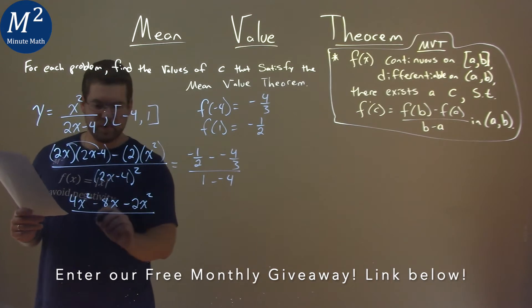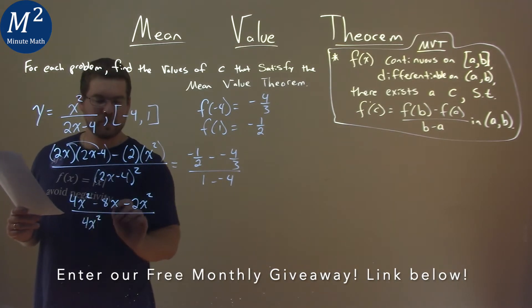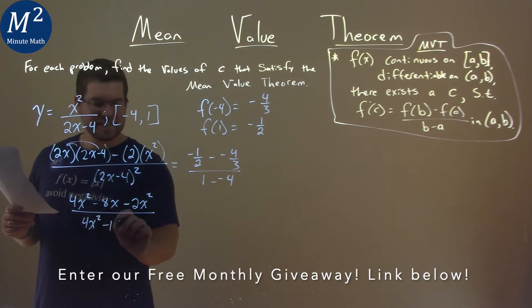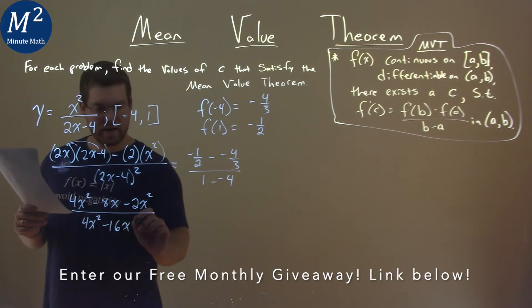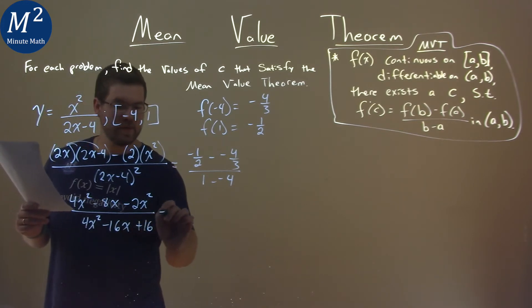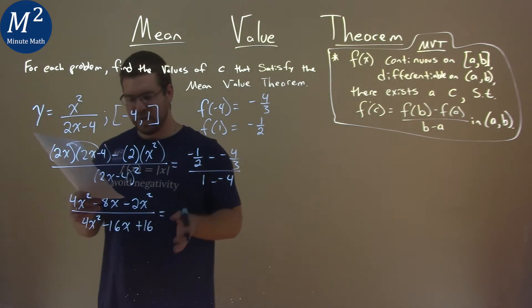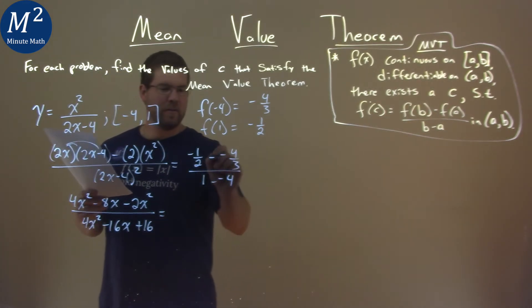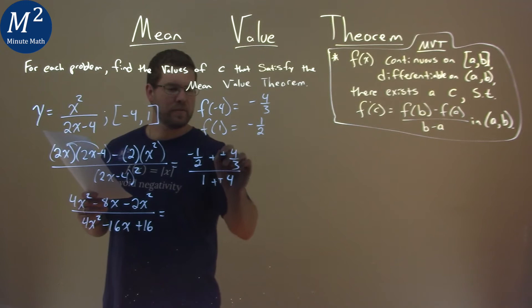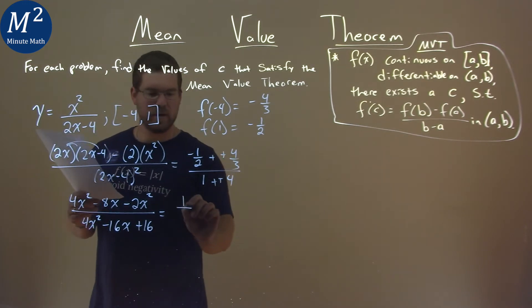We have 2x minus 4 times itself, so we have 4x squared here minus 16x plus 16. Is equal to, and this whole right-hand side here, we have plus a positive, plus a positive, either way, that simplifies to be 1 sixth.